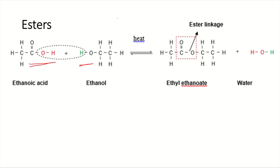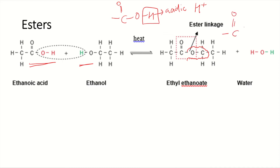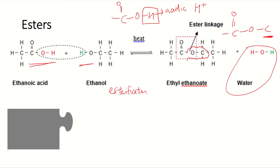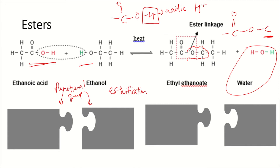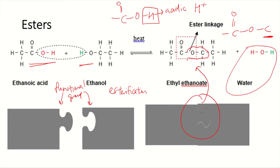One reminder: in carboxylic acid the H is acidic, whereas in an ester linkage the O is bonded to a C. During esterification, water is produced as a byproduct. Think of it like a jigsaw puzzle — one functional group from carboxylic acid joins with one from alcohol to form one ester linkage, releasing water.